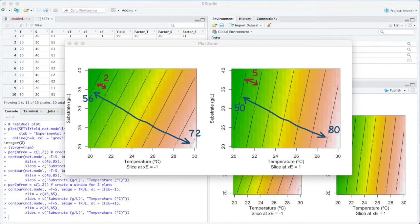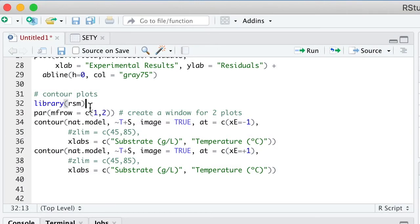So let's go back to our code. Now we are going to set the Z limit between 45 and 85 for both plots. Let's get rid of these hash symbols and run them again.